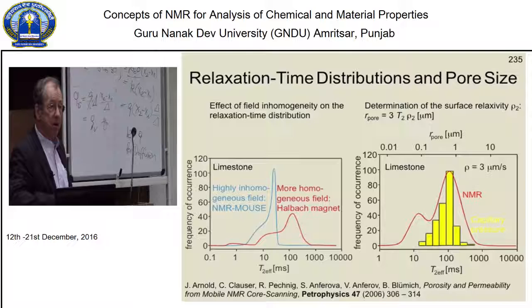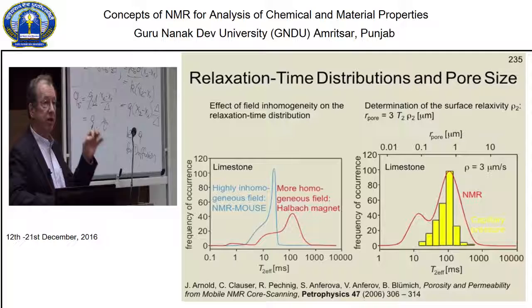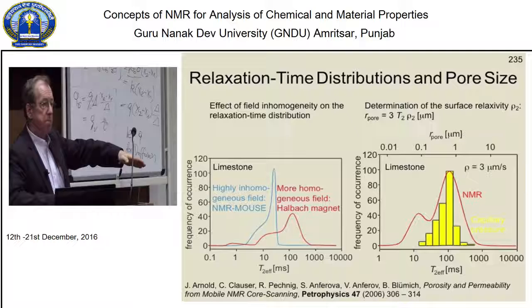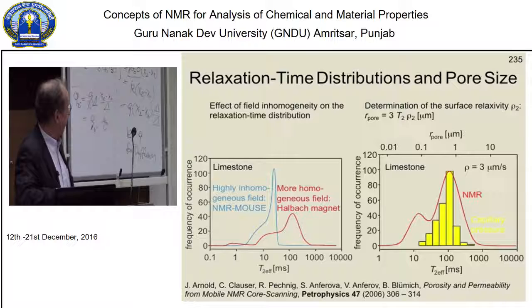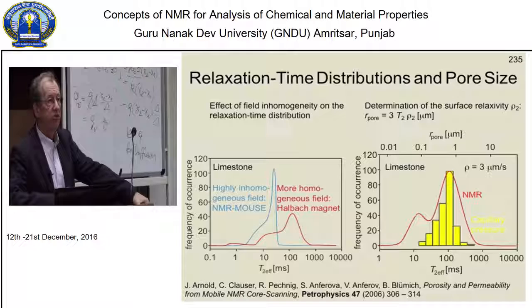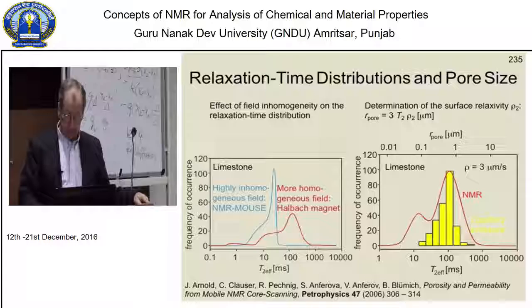With the NMR mouse or a stray-field sensor having a very strong external field gradient, you get additional signal attenuation from diffusion, so you measure a compressed version of the relaxation time distribution curve. But the compressed curve still looks similar to the unperturbed one — you don't lose information and can still get the pore size distribution from these portable instruments.